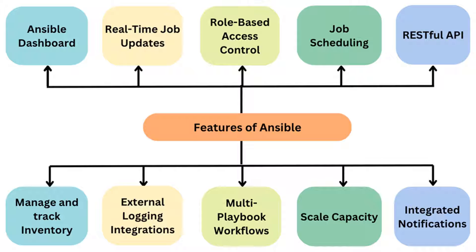The third important feature is job scheduling. Now that you have all these tasks, you can schedule them — who goes first, who goes second, who goes last. This is a better way to automate your processes. And fourth is real-time job updates: when you schedule a job, it gives you real-time updates via the graphical dashboard or UI so you can actually see what's happening in real time.